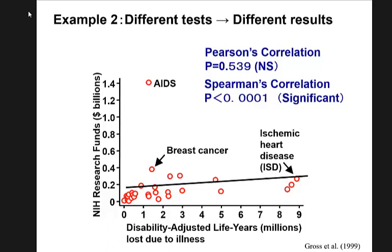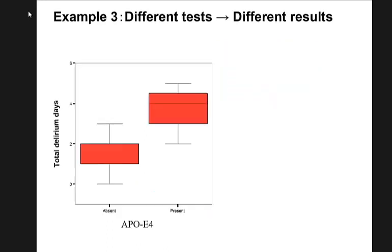The selection of a statistical test has something to do with the shape of your data. It has nothing to do with the study design — it has something to do with the type of your data. We don't worry about study design; we worry about the shape of the data.